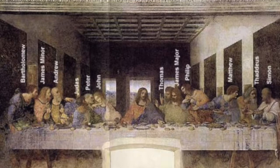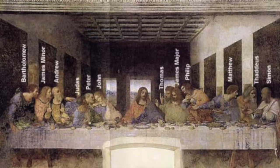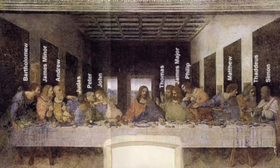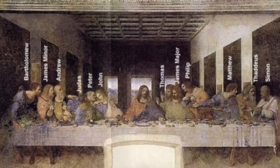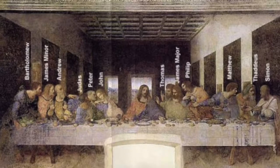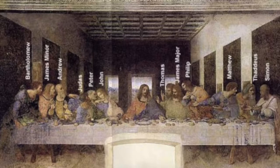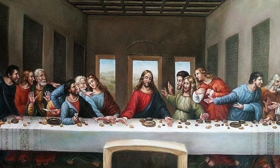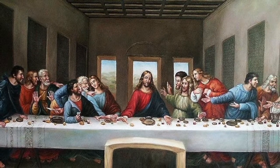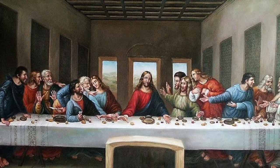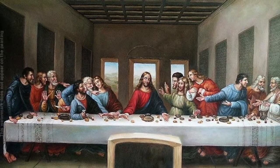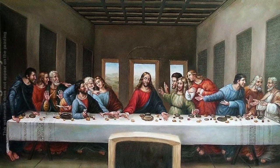The Last Supper shows, from left to right: Bartholomew, James, Andrew, Judas, Peter, John, Jesus Christ in the middle, Thomas, James the Greater, Philip, Matthew, Thaddeus, and Simon. Da Vinci painted the Last Supper after a saying from the Gospel: "He that dippeth his hand with me in the dish, the same shall betray me" — Matthew 26.